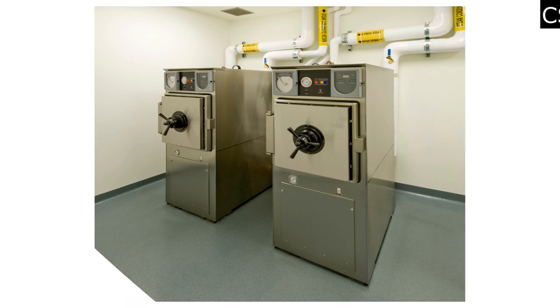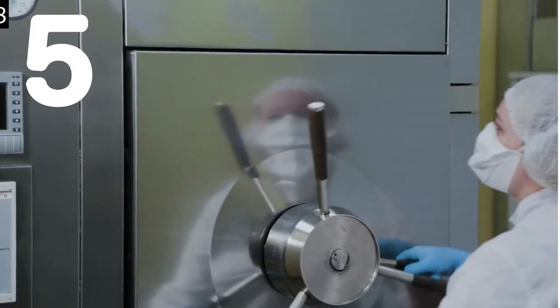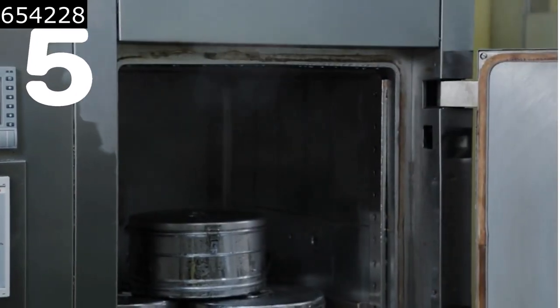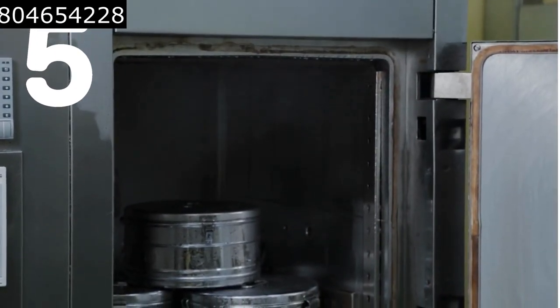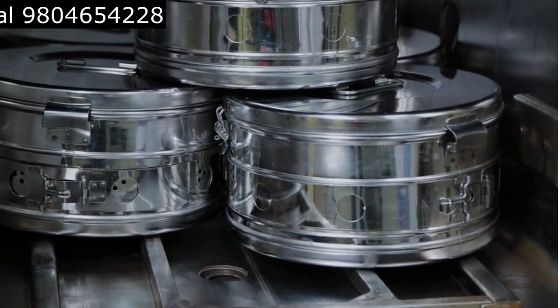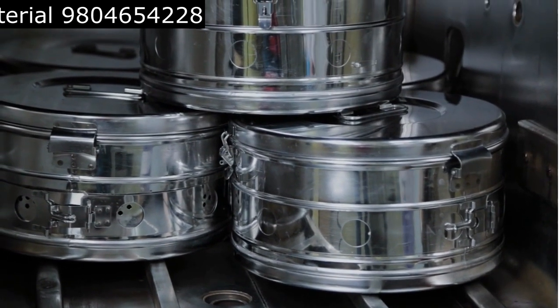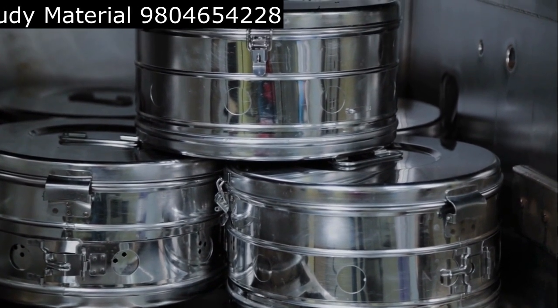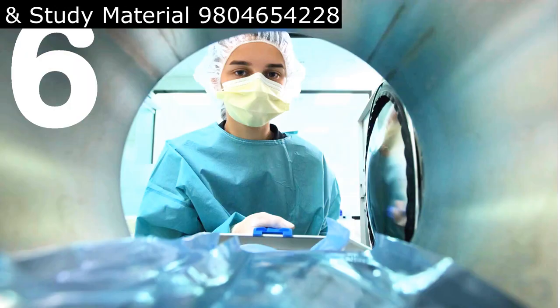Step 5 is cooling down and removing items. After the sterilization process is complete, the autoclave will begin to cool down. It's important to let the autoclave cool down completely before attempting to remove the items inside. Once the autoclave has cooled down, you can safely remove the sterilized items.